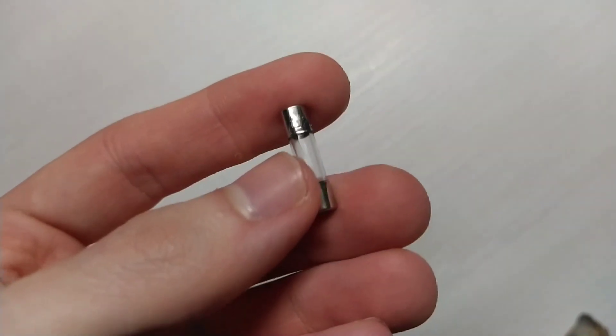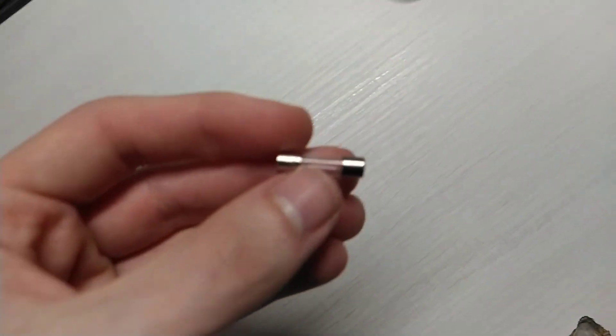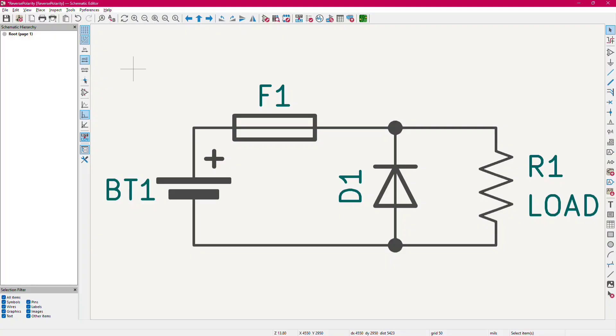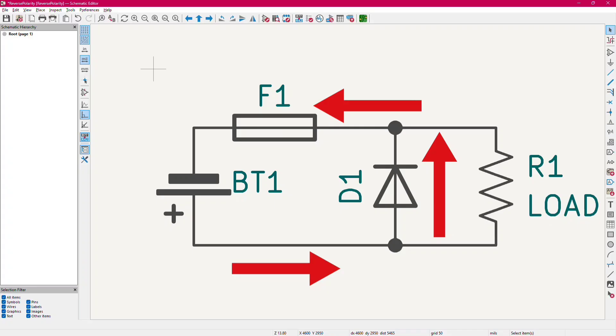Another reverse polarity protection circuit could be made using a fuse and a diode in this configuration. When connected correctly, the current goes from the battery through the fuse and the load and then back to the battery. When connected in reverse, the current goes from the battery through the diode and then through the fuse that then blows up. Let's check if this works.